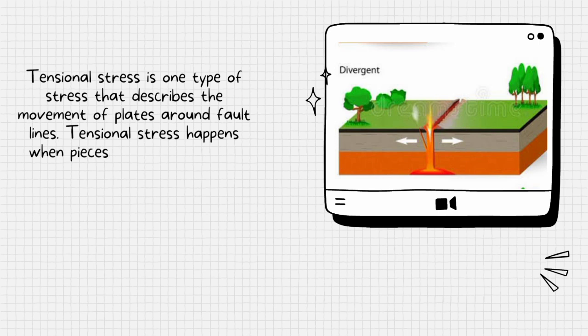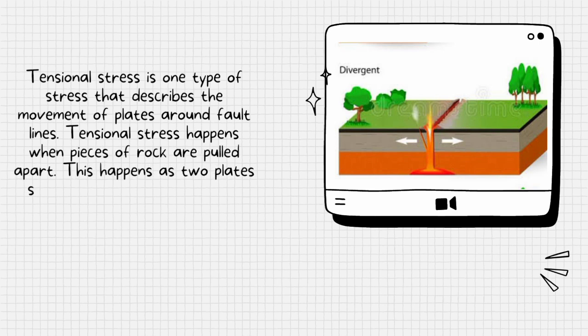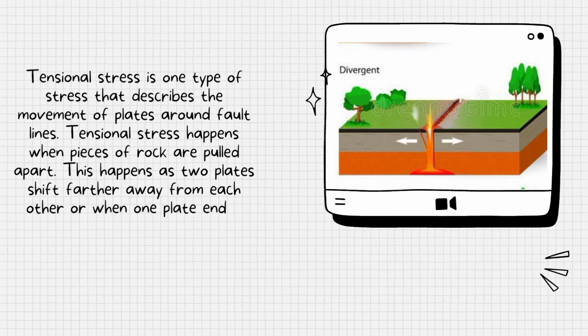Tensional stress happens when pieces of rock are pulled apart. This happens when two plates shift farther away from each other, or when one plate end is moving in a different direction than another end.